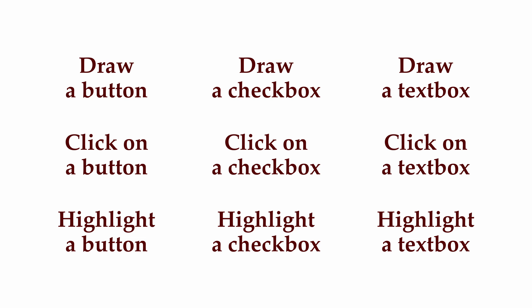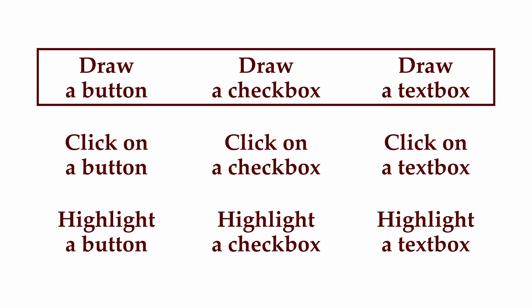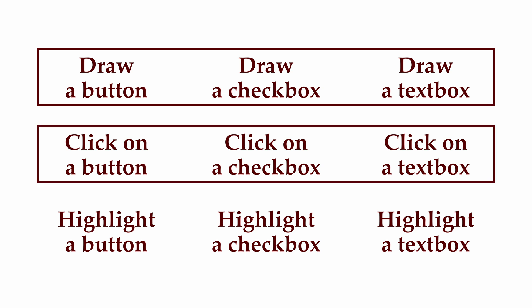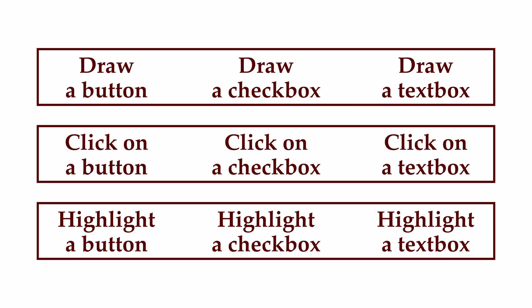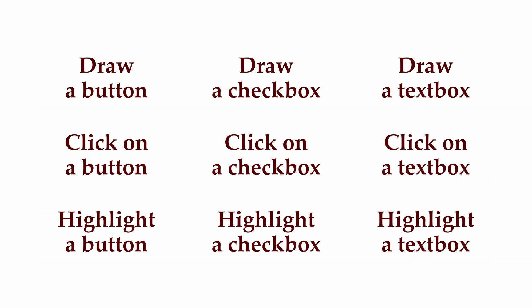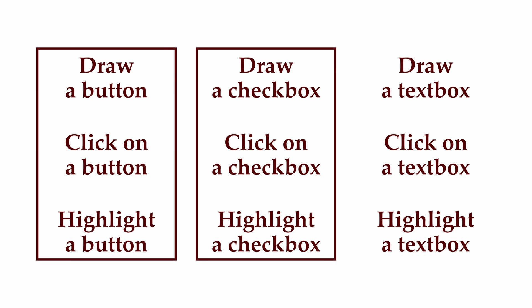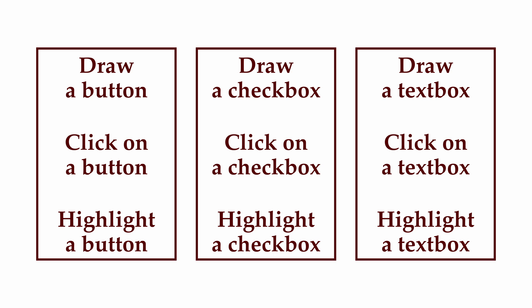We could organize our code by function, organizing all the drawing code together, all the code for clicking together, all the code for highlighting together. But another approach is to organize code by object: group all the code for buttons together, all the code for check boxes together, all the code for text boxes together. One key advantage here is that it becomes easy to add new kinds of objects without needing to modify any of the code for the existing objects.